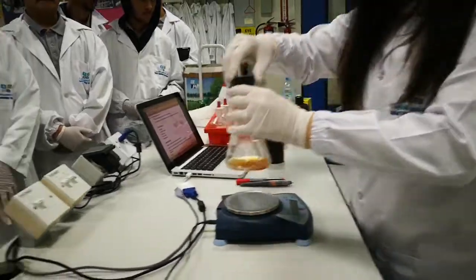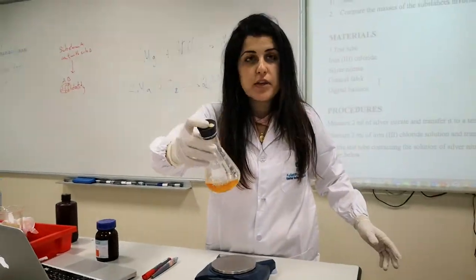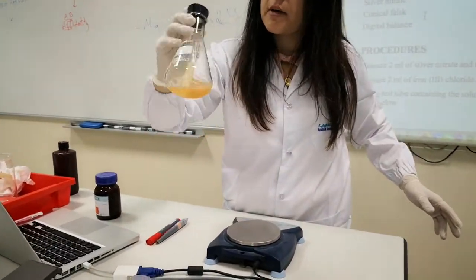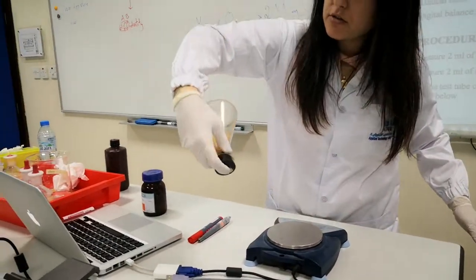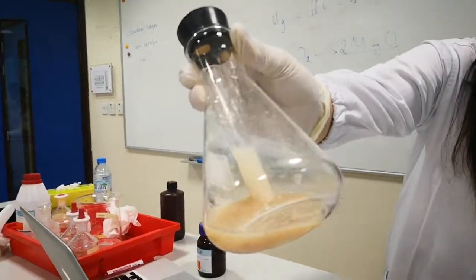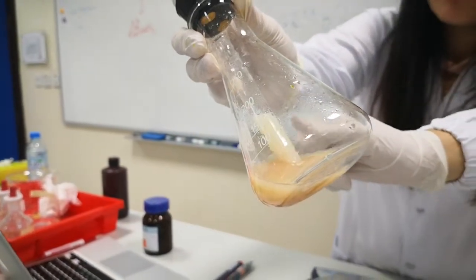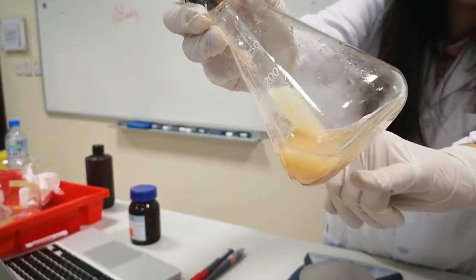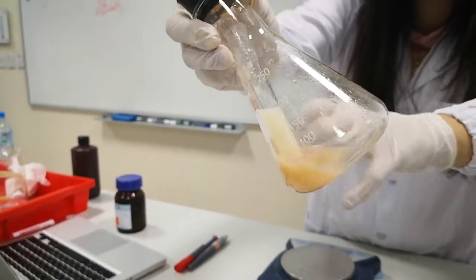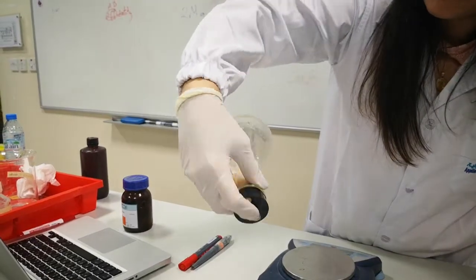Now I am going to let the two reactants mix together in order for a chemical reaction to occur. As you can see, a solid white powder is forming in the test tube, and a cloudy solution is also remaining in the flask.